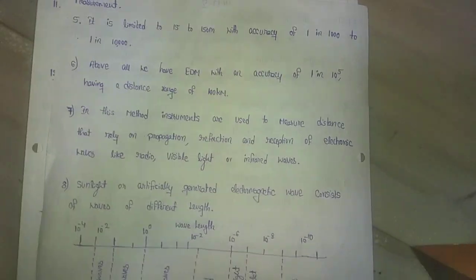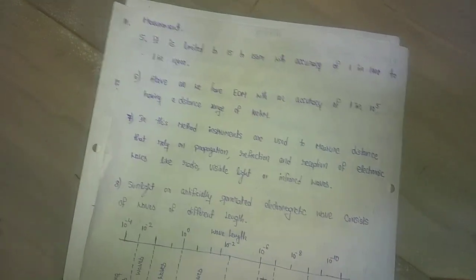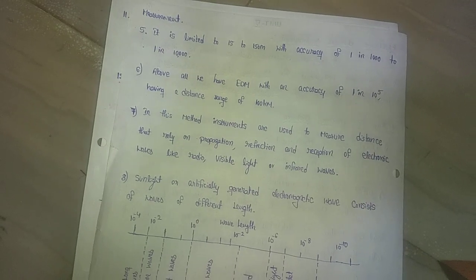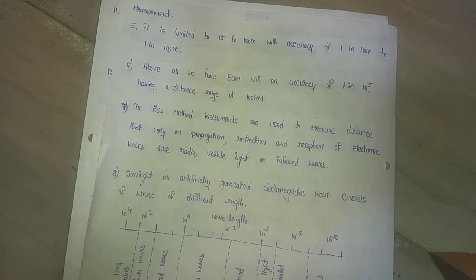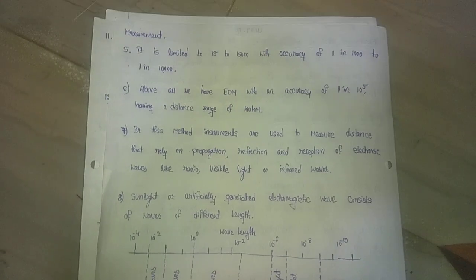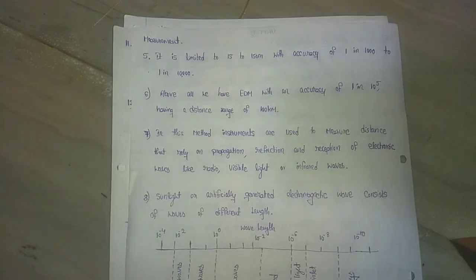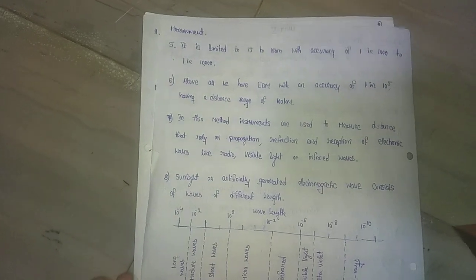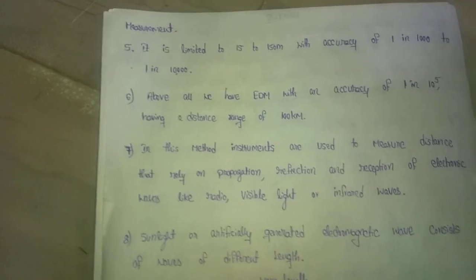Above two meters, it is very difficult to use in terrain. So direct distance measurement and optical distance measurement in terrain - accurate distance measurement is not possible. Therefore, we use electronic distance measurement.